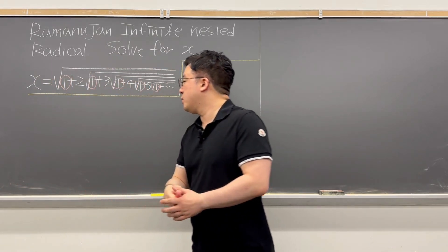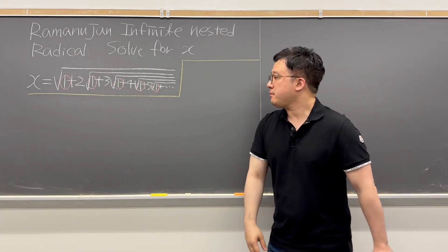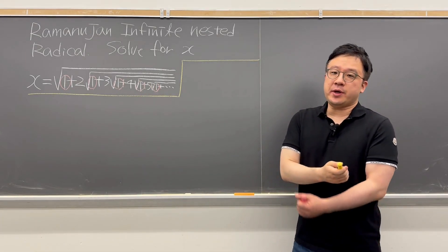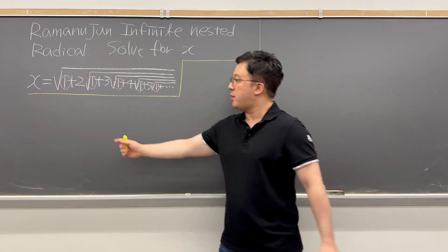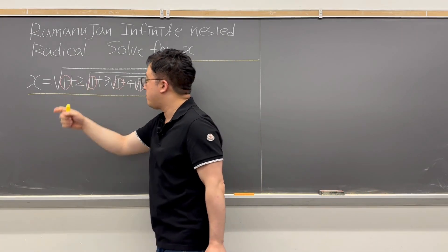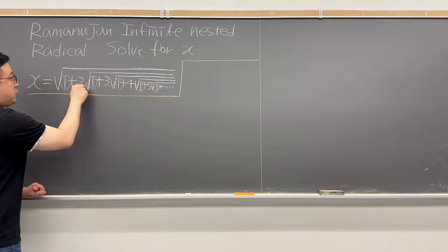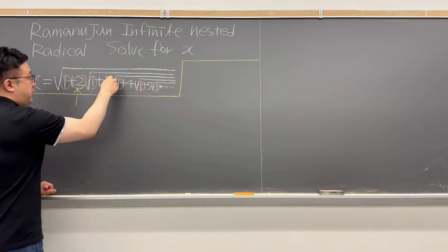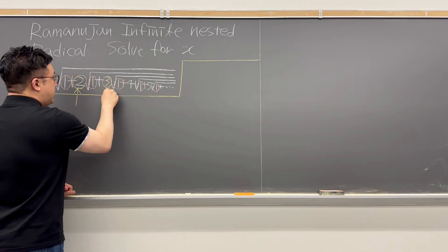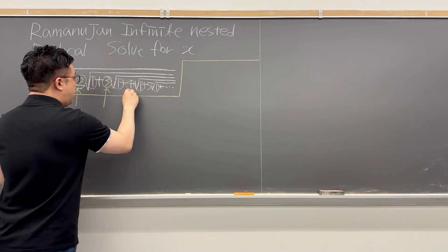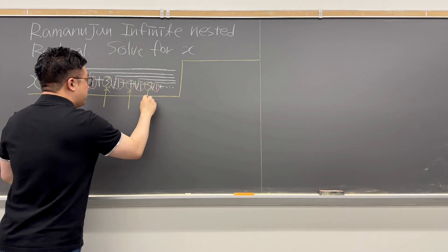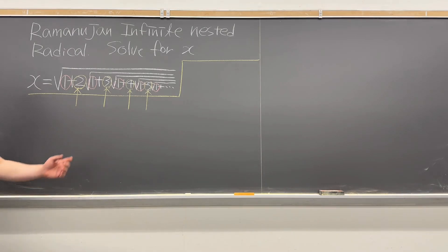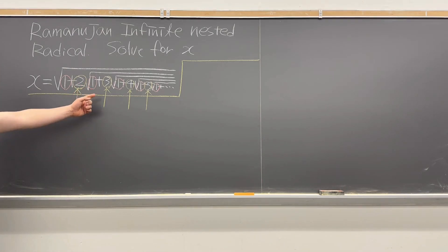So each one of those square roots will start with the 1. We have 1 plus some number multiplied by the other square root, and so on. More importantly, for each one of those square roots, it's multiplied by some number that is outside of it, starting with 2 — then 3, then 4, then 5, and so on. So we need to focus on those numbers that I circled in yellow.